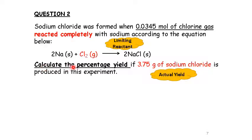So next check. What is the question asked about? The question asked about percentage yield. If 3.75 gram of sodium chloride is produced in this experiment. So this is the actual yield. Meaning that we need to use the stoichiometry method to determine the theoretical yield of sodium chloride.